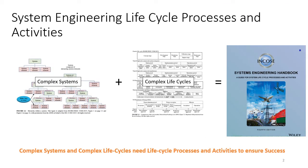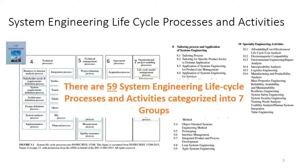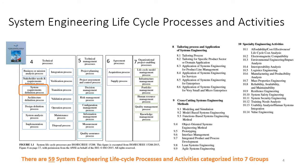As we said in earlier chapters, the purpose of the System Engineering Handbook is to document a system lifecycle process and activities that can deal with the development of complex systems in a complex development, deployment, and operational lifecycle. There are a total of 59 engineering lifecycle processes and activities, and they're categorized into seven groups in the System Engineering Handbook. The topic of this video is the System Requirements Definition Process, which is part of the technical processes in Section 4 of the handbook.